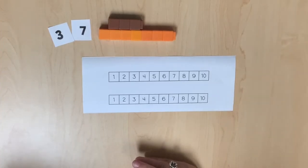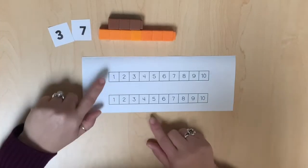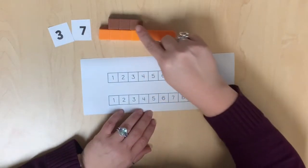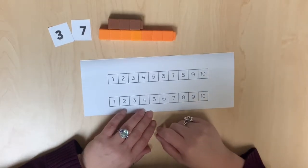When we compare numbers, we can use two number paths arranged one on top of another. Using sets of linking cubes, we can begin by representing each of the quantities.